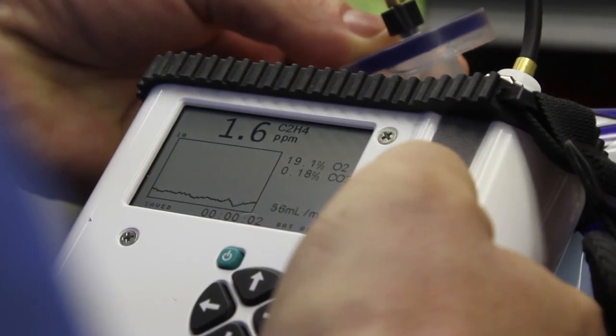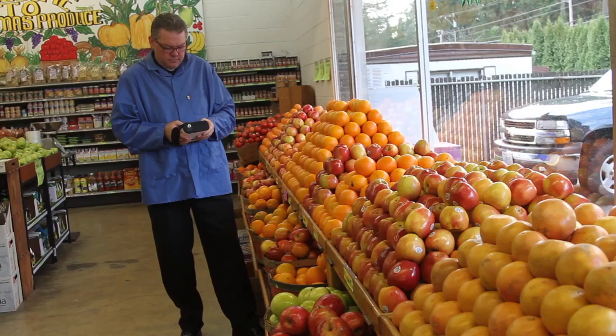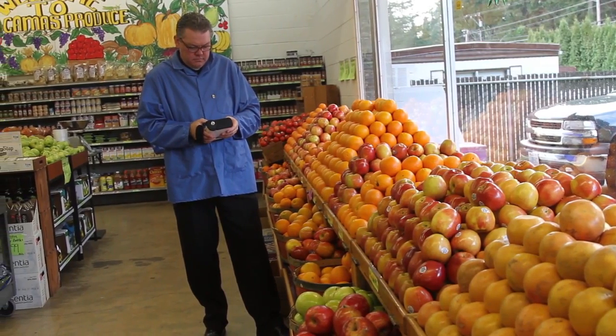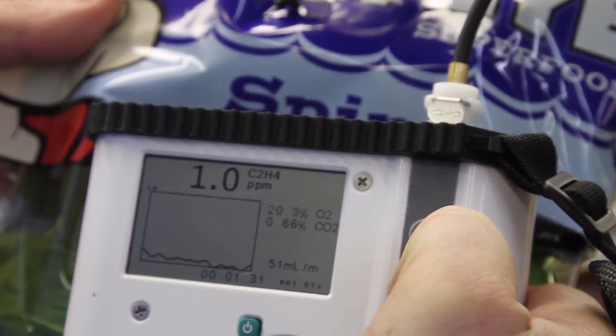Quality assurance for perishable cut produce demands a more comprehensive analysis. Most modified atmosphere packaging gas analyzers are equipped to only measure CO2 and or O2 measurements. The F950 handheld ethylene analyzer delivers all three.